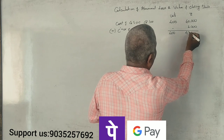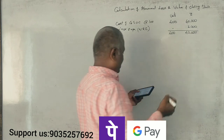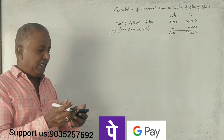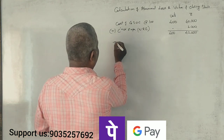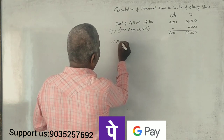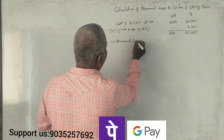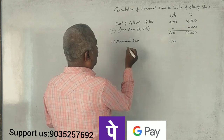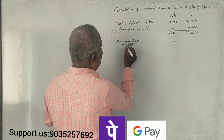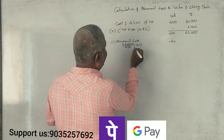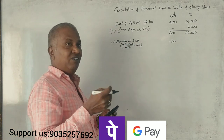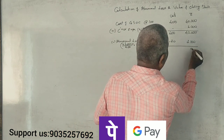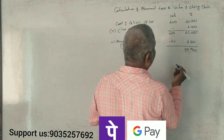We have 400 units totaling ₹42,000. Transit loss is 20 units, costing ₹2,100. After removing the transit loss, the remaining value is ₹39,900 for 380 units.